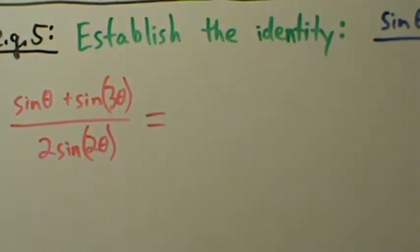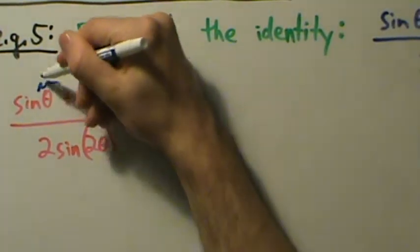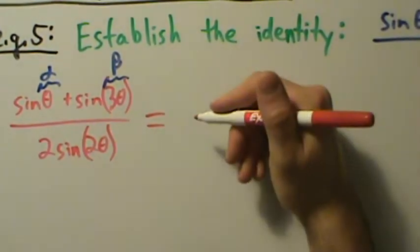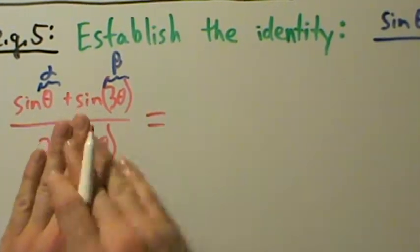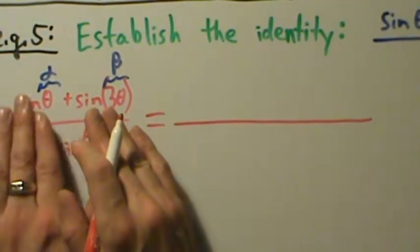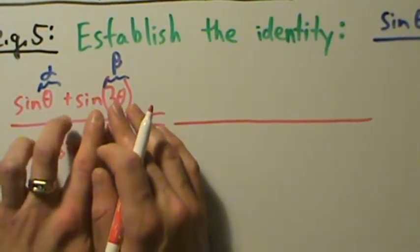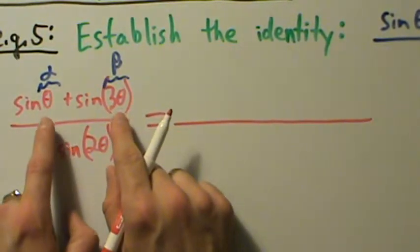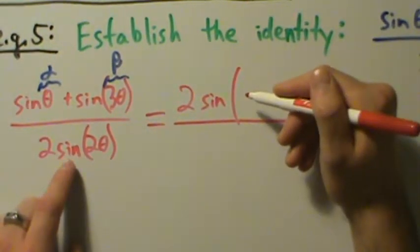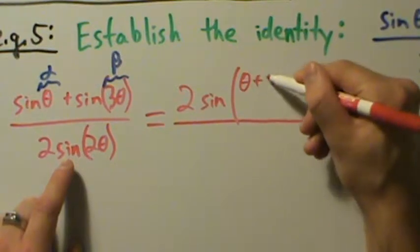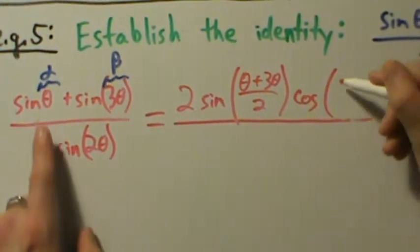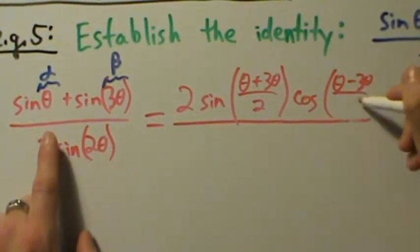We'll use that formula with theta as alpha and three theta as beta. Forget about the denominator for now — we'll come back to it. Looking at just the top, sine of theta plus sine of three theta becomes two times sine of (theta plus three theta)/2 times cosine of (theta minus three theta)/2. On the bottom, we still have two times sine of two theta.